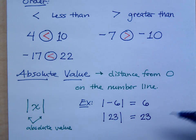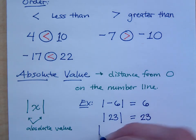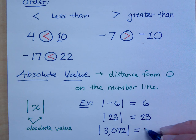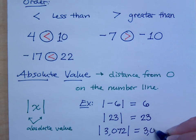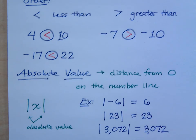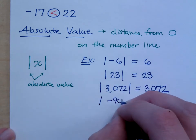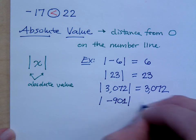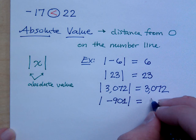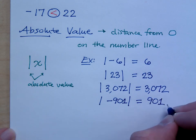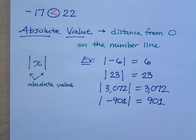Are you with me on that? What's the absolute value of 3,072? It's 3,072, right? If I ask you for the absolute value of negative 901, it's going to be 901 that's positive, right? Because how many clicks away from zero is negative 901? It's 901 spots away. Are you guys with me on that?